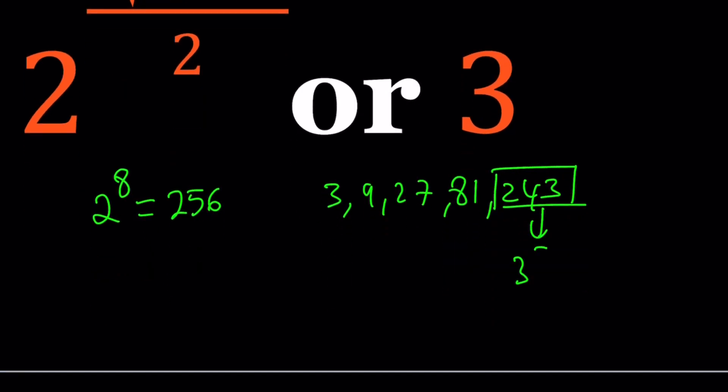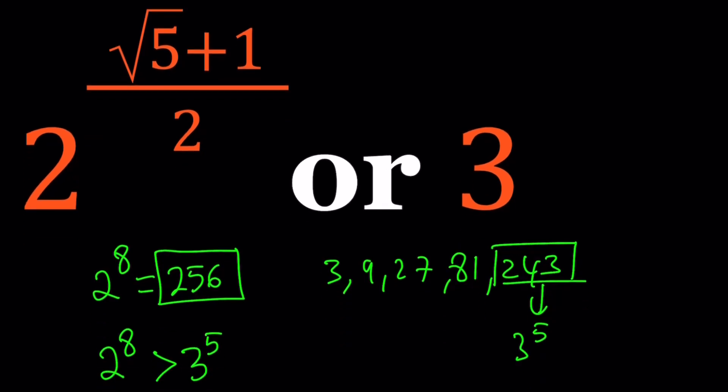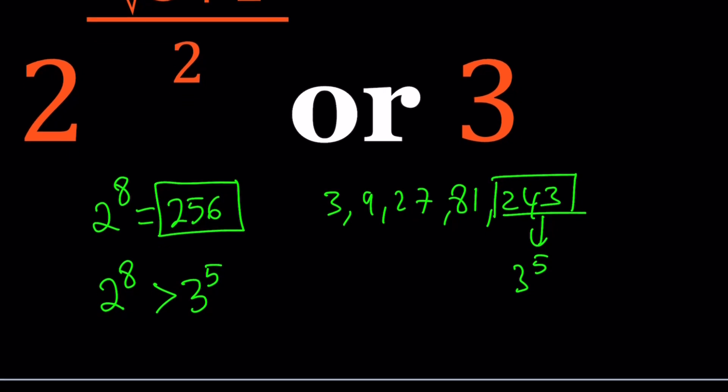Therefore, I can safely say that 256 > 243. In other words, 2^8 > 3^5. Now, why am I using integer powers of 2 and 3? Obviously, I'm going to have to go to that radical, the golden ratio. But before that, I need to be able to compare these two numbers. So let's see how we can use it.